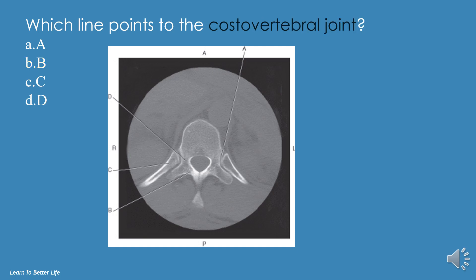Which line points to the costovertebral joint? A, B, C, or D? The answer is A. Which line points to the pedicle? A, B, C, or D? The answer is D.